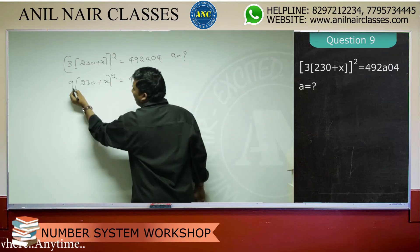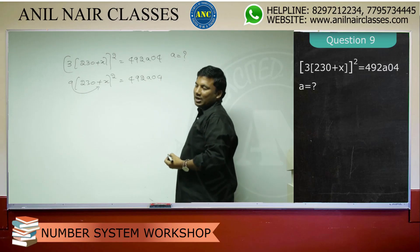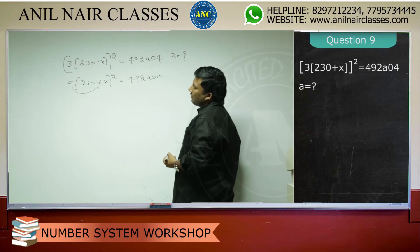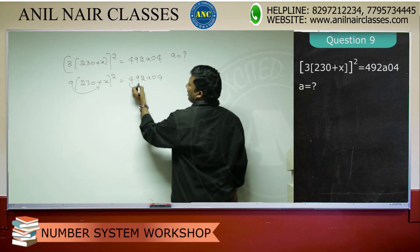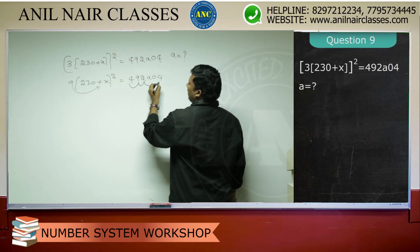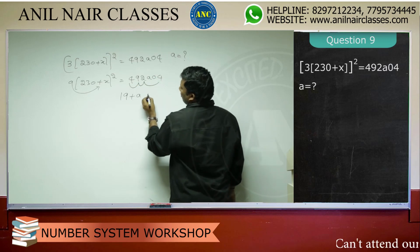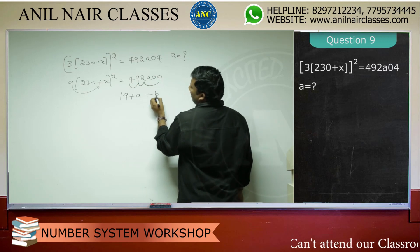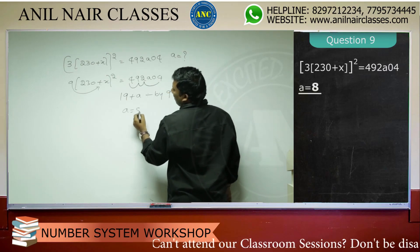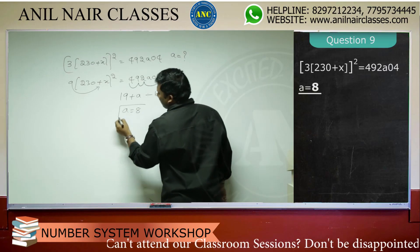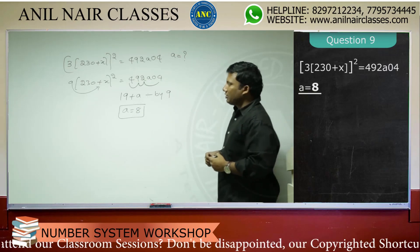9 into any number — if you multiply any number by 9, the digital sum will always be 9. So 4 plus 9 is 13, plus 1 is 15, plus 4 is 19. So 19 plus A should be divisible by 9, which means A value will be 8.